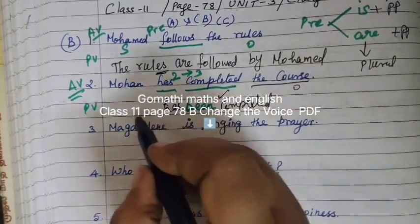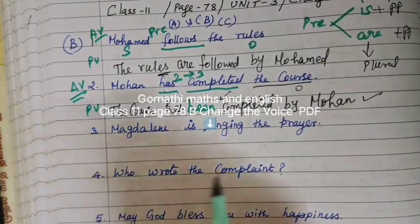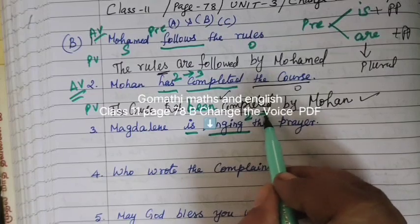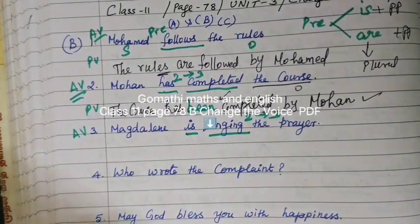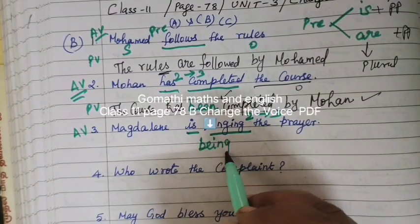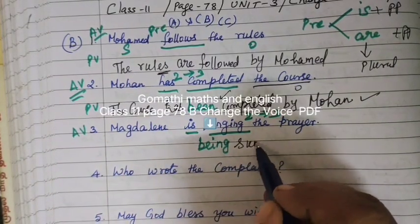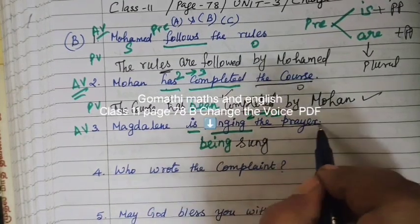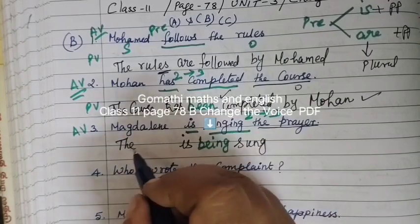Then write the object. 'Is singing the prayer' — the verb is 'singing,' so this is a double verb, making it a triple verb change in passive. The active voice uses 'is singing,' so in passive we use 'being' plus the third form. 'Sing' becomes 'sung.' For singular subjects, write 'is'; for plural, write 'are.'